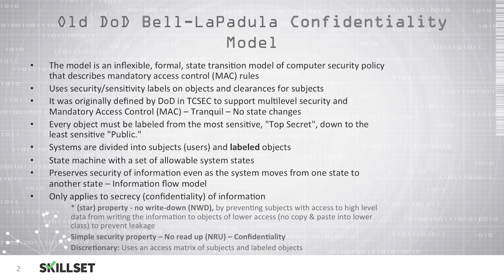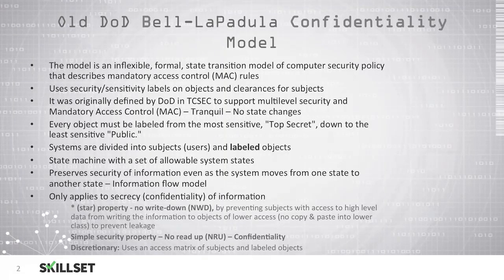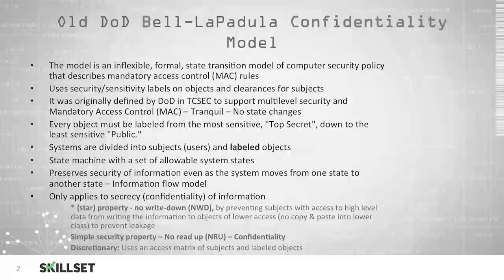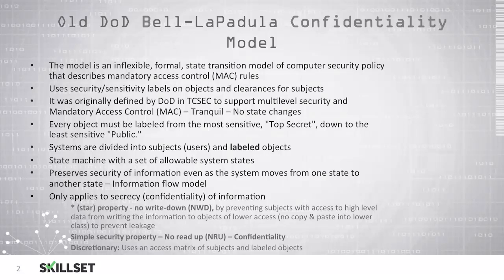We have a couple of properties used in this model. The star property prevents anyone from writing down to a level below them. This prevents subjects with top-secret clearance, for example, from writing that information into the secret or public area. They don't want anyone to be able to copy information and paste it into a lower level because that would allow leakage.